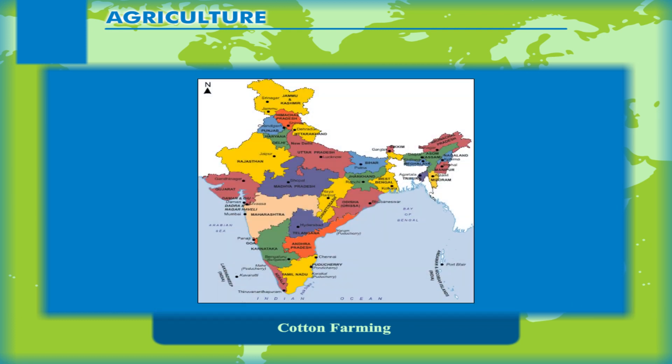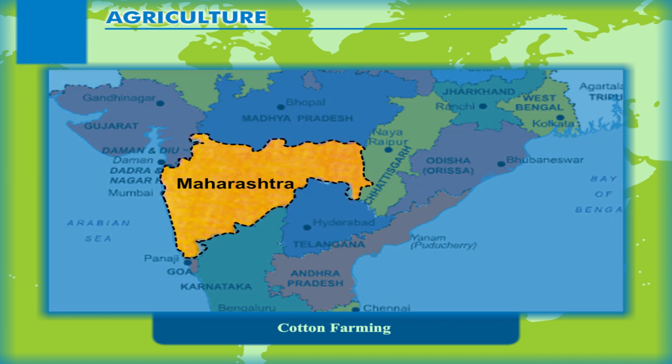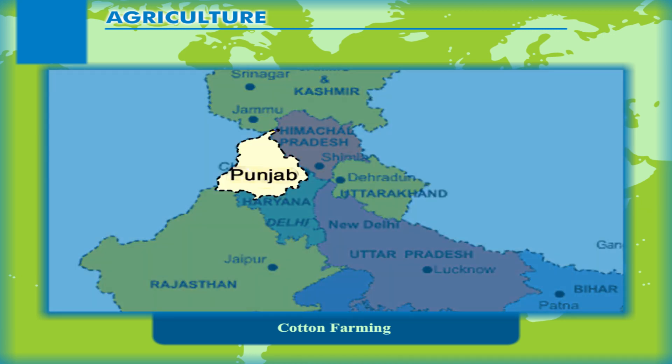In India, cotton is produced to a large extent in Maharashtra, Gujarat, Punjab and Haryana.